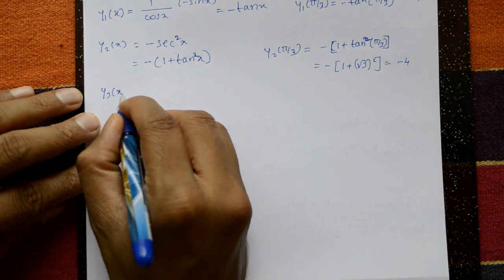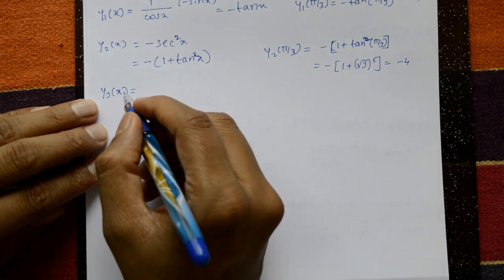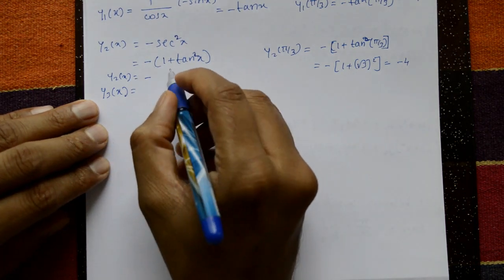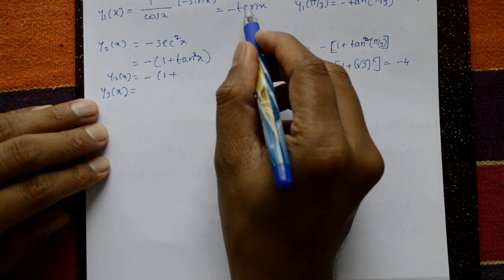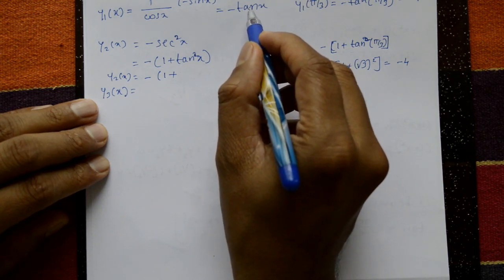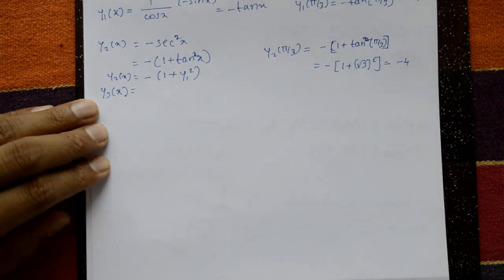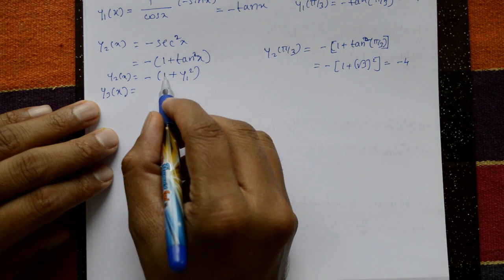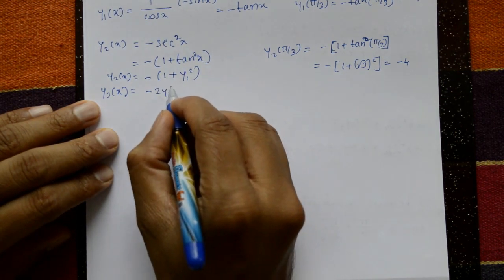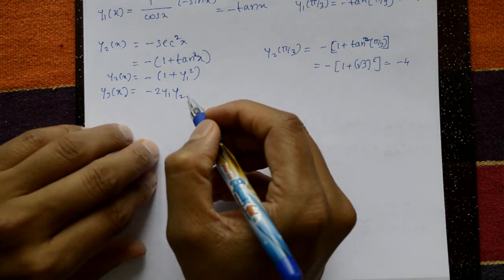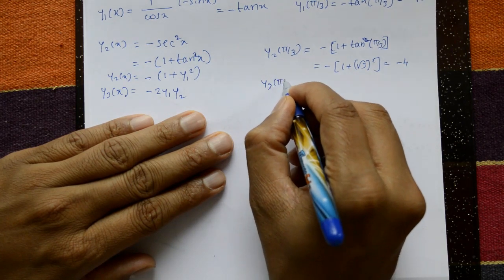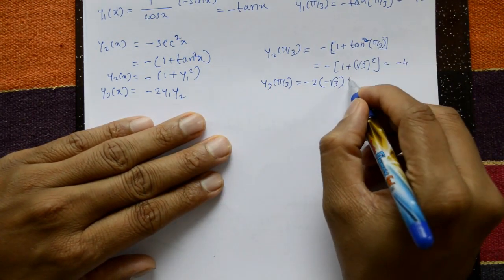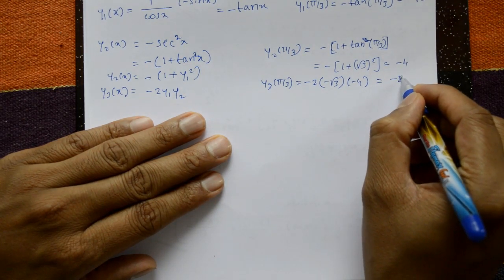For y₃(x): rewrite y₂(x) = −(1 + tan²x) = −(1 + y₁²). Differentiating: y₃ = −2·y₁·y₂. Substituting: y₃(π/3) = −2 × (−√3) × (−4) = −8√3.